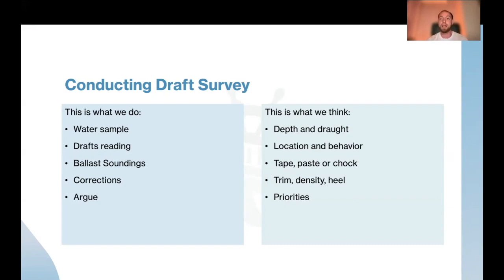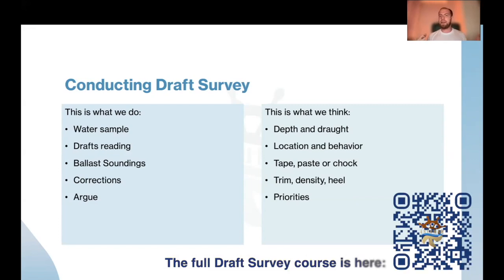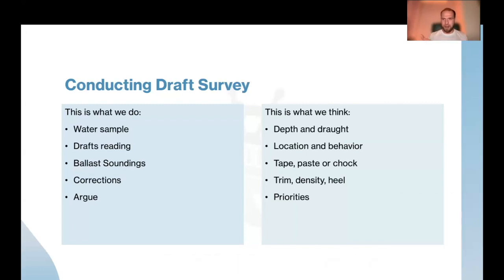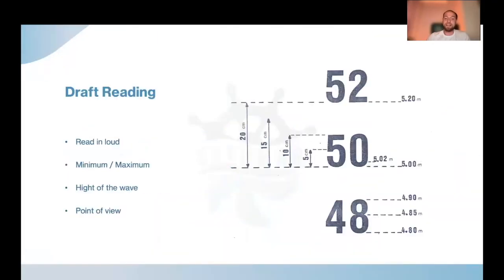If you're almost in equal drafts, okay, maybe he's a good person. Be careful only with the middle draft. The middle draft is the most important, because if you take forward and aft draft appropriately, you will have a sagging or you will have a hogging. This is nothing if you play with your Excel form.